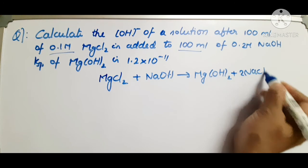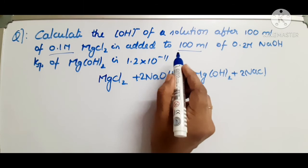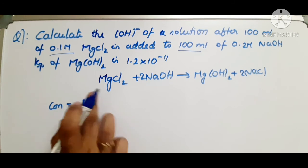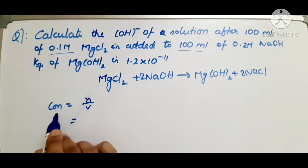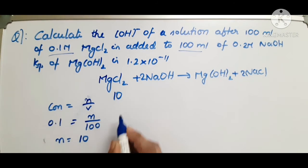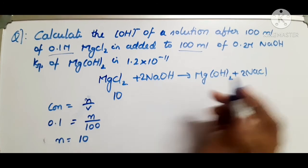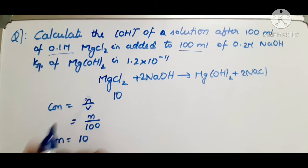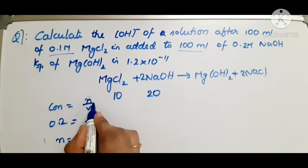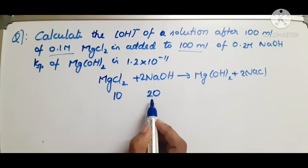Millimoles of MgCl₂ = 0.1 M × 100 mL = 10 millimoles. Millimoles of NaOH = 0.2 M × 100 mL = 20 millimoles. So before the reaction you have 10 millimoles of MgCl₂ and 20 millimoles of NaOH.